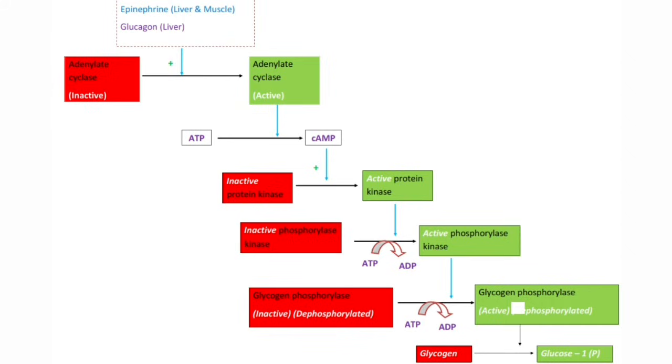Once glycogen phosphorylase is phosphorylated, that means it is activated, it can act on glycogen and releases the glucose units in the form of glucose-1-phosphate. The overall effect of epinephrine and glucagon is they will activate the glycogen phosphorylase, which in turn increases the degradation of glycogen to glucose.